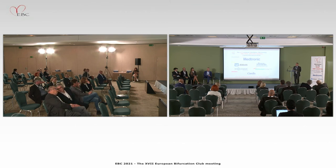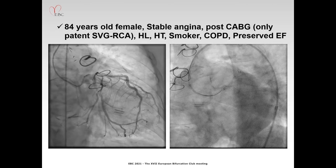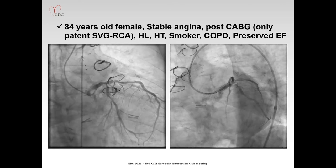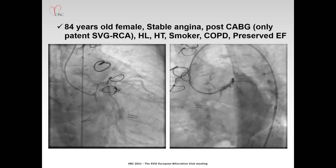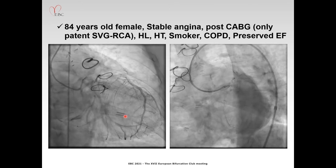We move forward and connect with researcher Akiko Meara, who will present a stent thrombosis in distal left main stents. Dear Chairman, thank you for the invitation to present at the EBC 2021 meeting. This is a case from Columbia, not in the EXCEL trial. This is an 84-year-old female with a bypass about 20 years ago, with only a patent SVG to right coronary artery, presenting with stable angina due to unprotected distal left main disease with a Medina 1-1-1 lesion — particularly a quite tight circumflex ostium.